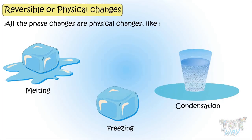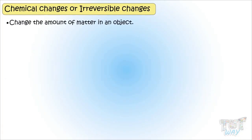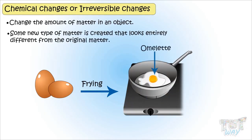Now let's learn about chemical changes or irreversible changes. Chemical changes are those changes that change the amount of matter in an object, and some new type of matter is formed that looks entirely different from the original matter and are irreversible — that is, cannot be reversed once done.